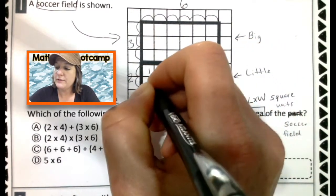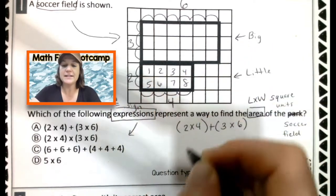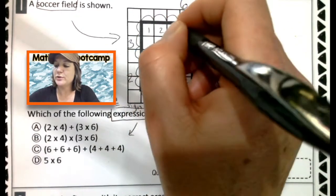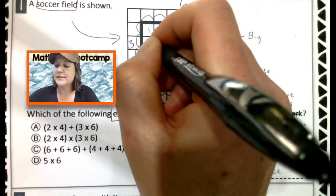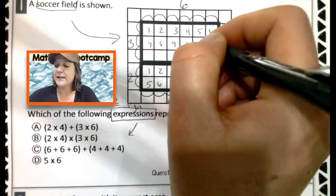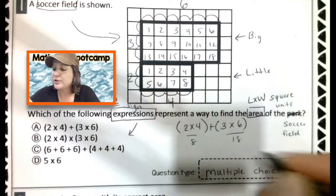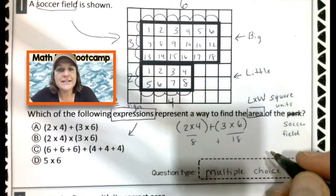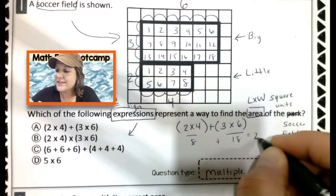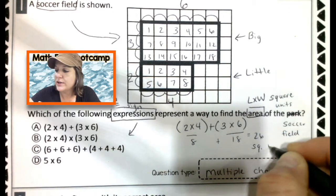Two times four is one, two, three, four, five, six, seven, eight. And three times six would be one, two, three, four, five, six, seven, eight, nine, 10, 11, 12, 13, 14, 15, 16, 17, 18. To get a total of when we add eight plus 18, that's 26 square units.